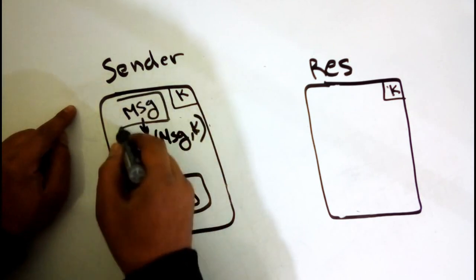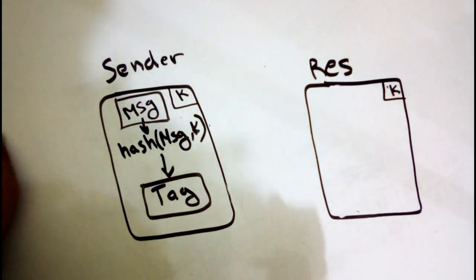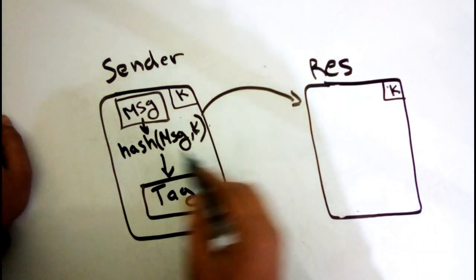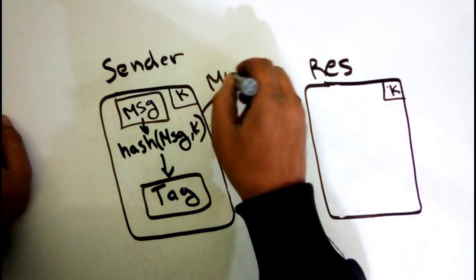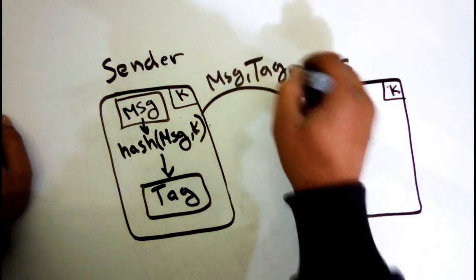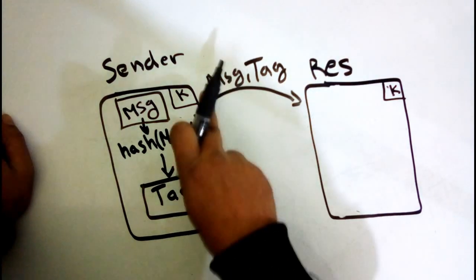Now we have a message and a tag. The sender sends the message and the tag, and when the receiver receives these two components.